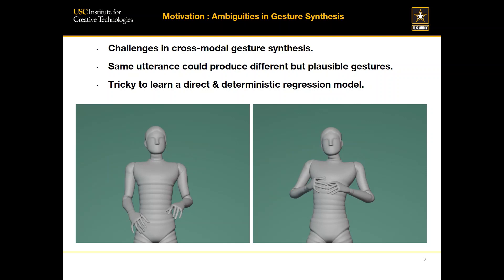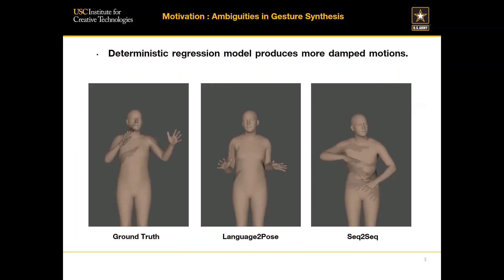This makes it more difficult if we try to use a deterministic regression model to directly learn the gesture. In this setting, you are not going to learn either of the gestures — you are likely to just learn the average of them. And this will also cause problems when we use the model to synthesize the gesture.